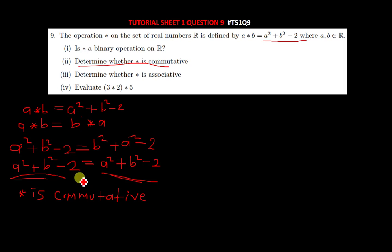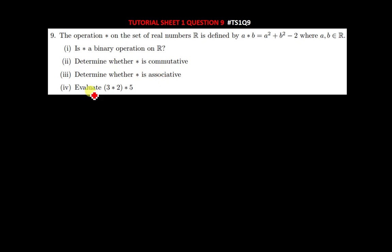Since we have gotten the same answers on both sides, star is commutative. Let us now move on to the third question: determine whether star is associative.